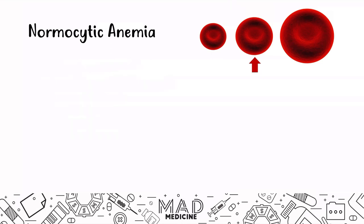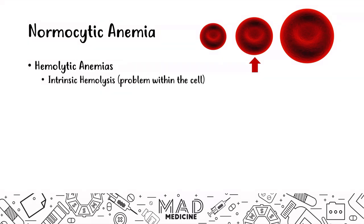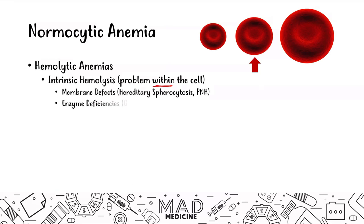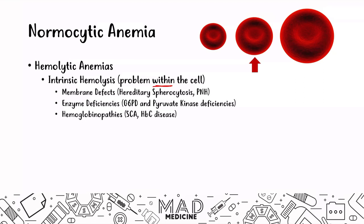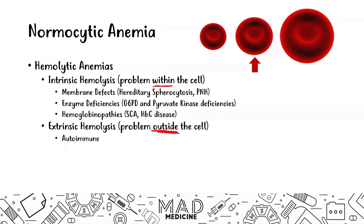Let's talk a little bit more about hemolytic anemias. You have intrinsic causes of hemolysis, which are going to be problems within the cell — things that are causing the cell not to function properly — and these include membrane defects, enzyme deficiencies, and hemoglobinopathies. Then you also have extrinsic causes, problems outside of the cell, which include autoimmune issues, microangiopathic and macroangiopathic anemias that cause hemolysis, as well as infections.